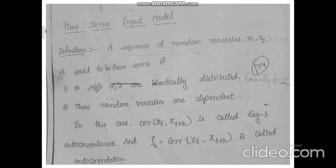When the random variables are dependent, the covariance is represented as cov(xt, xt+h), which is called lag-h autocovariance. Similarly, rho_h equals the correlation of xt and xt+h, which is called autocorrelation.